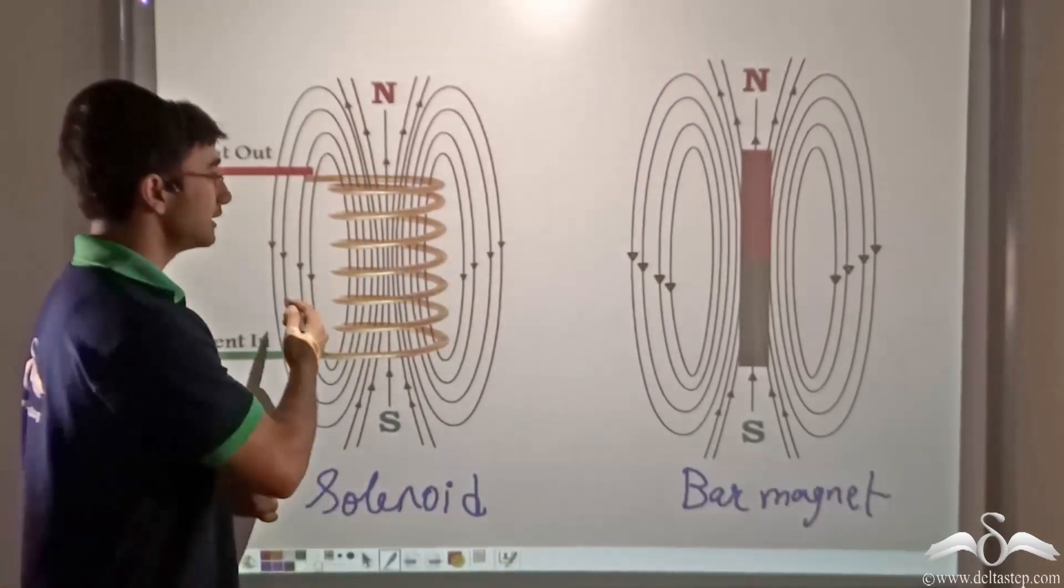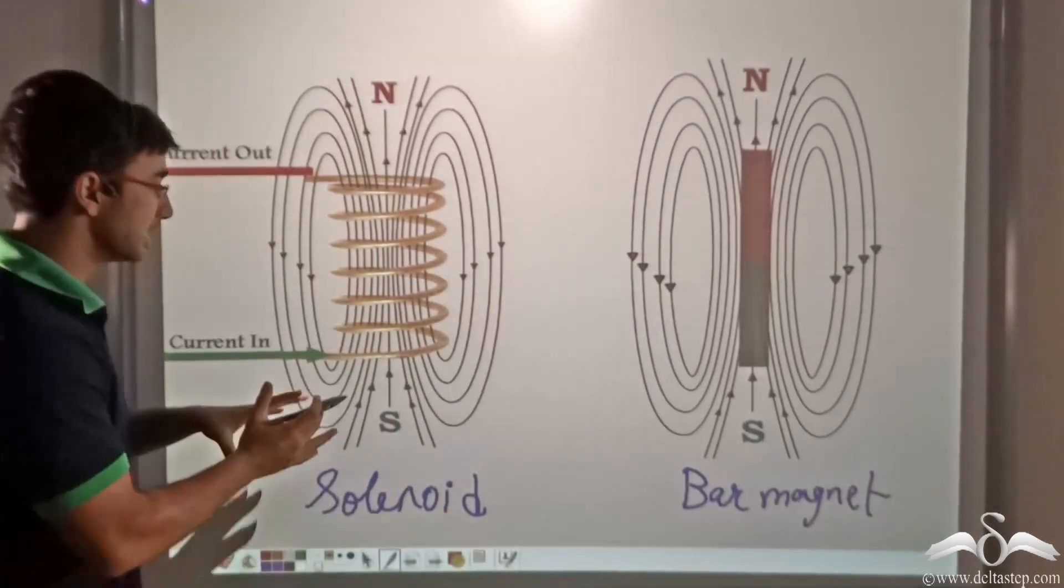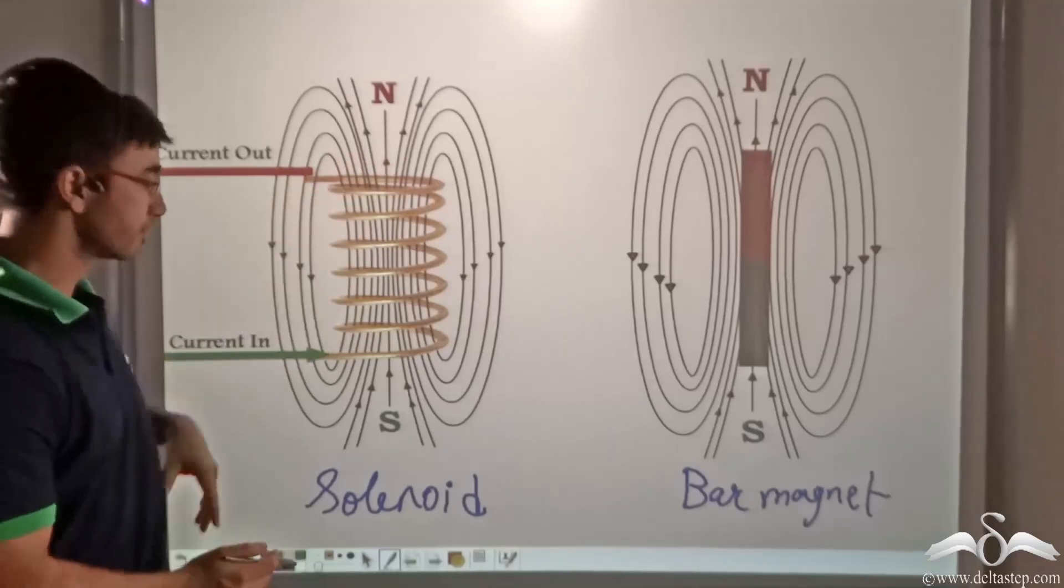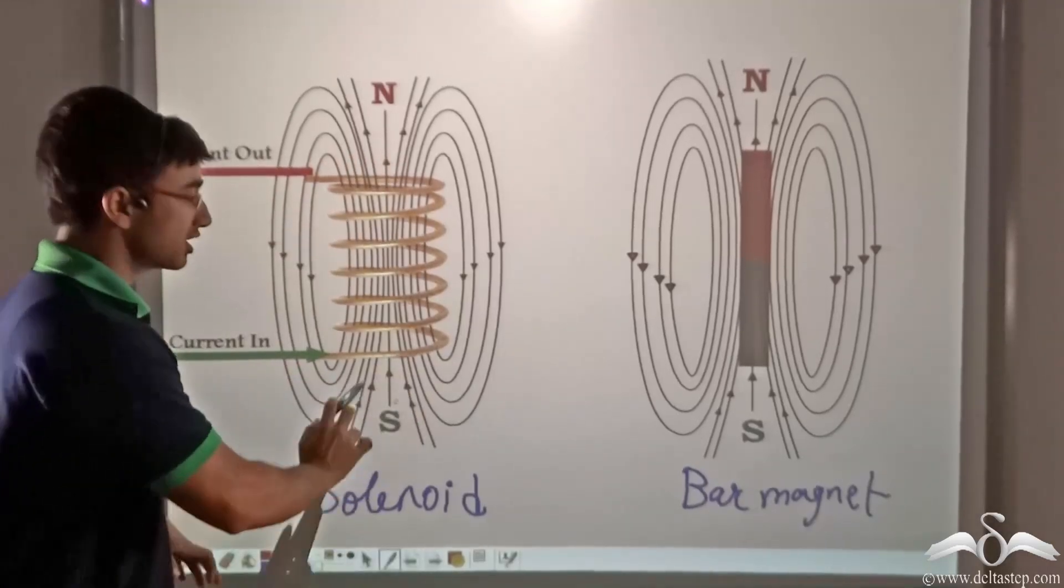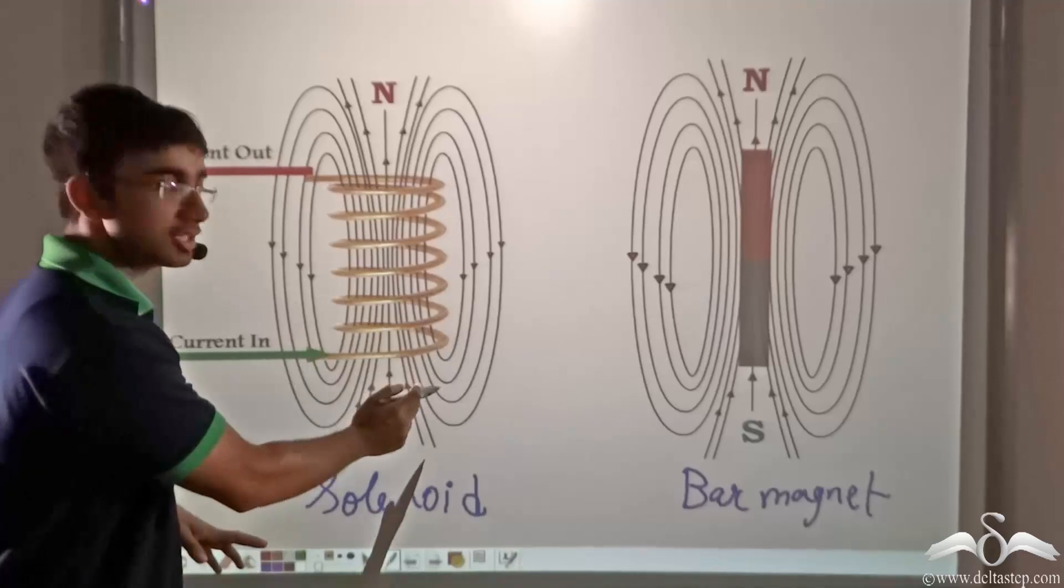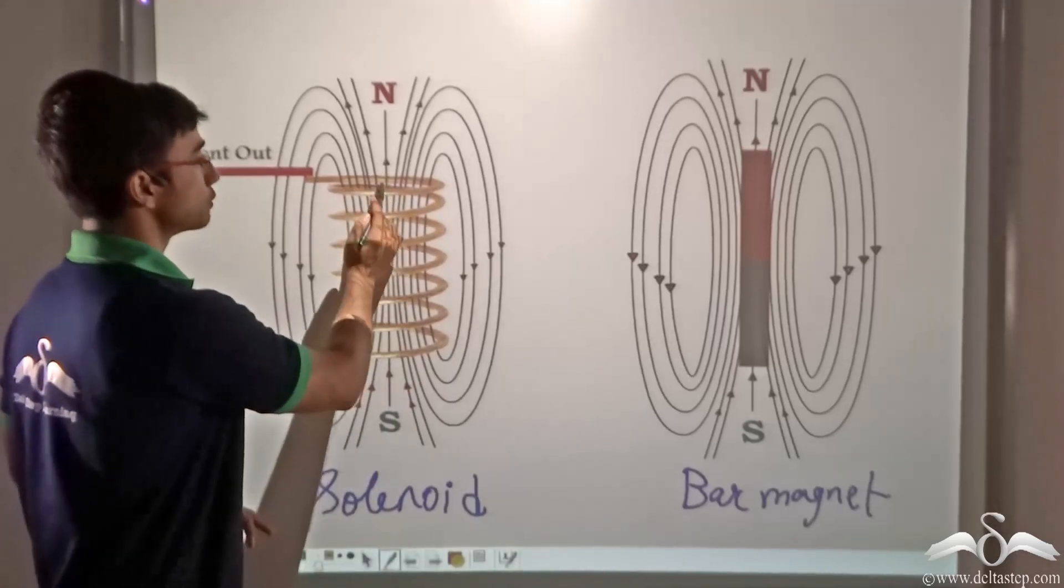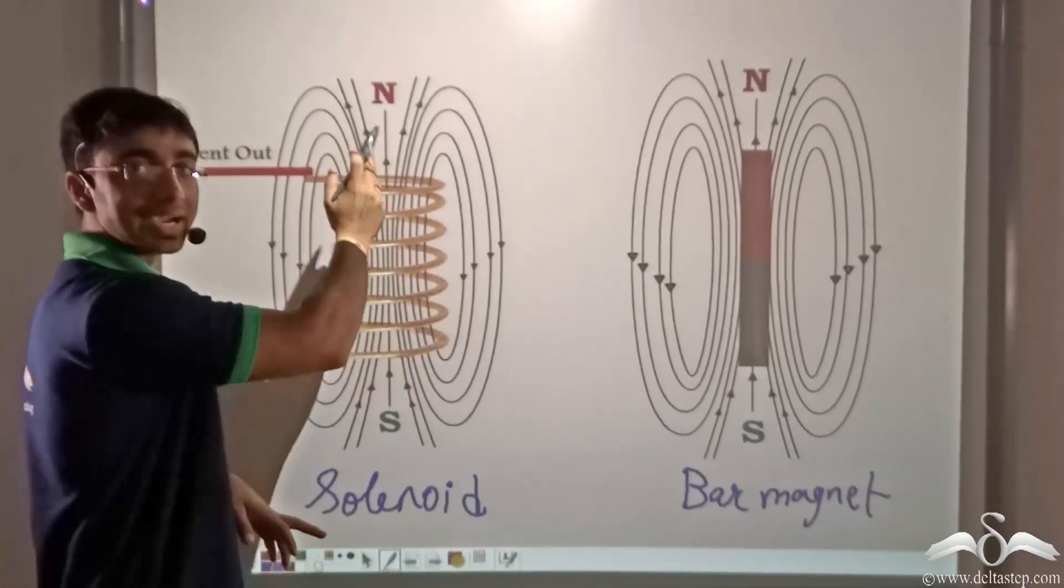So we have found out that when current is flowing through a solenoid and if we look at the solenoid from the top, then this is the south pole because current is in the clockwise direction and this is the north pole because current is in the anticlockwise direction. So this is how a current carrying solenoid resembles a bar magnet.